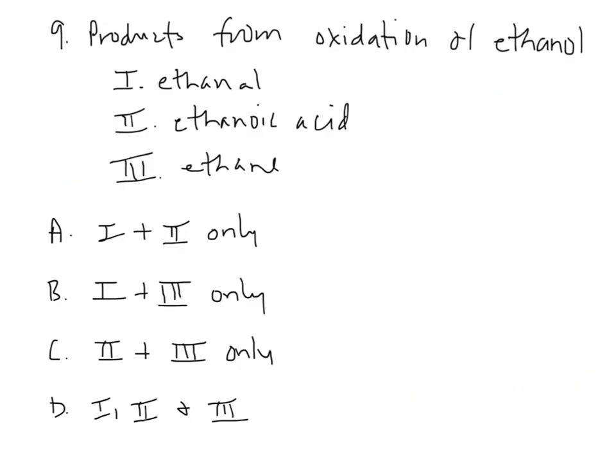Number nine, products formed from oxidation of ethanol. So if you think ethanol would just be like so with the five hydrogens attached. So this is going to be a primary alcohol, so that means I could make both an aldehyde and a carboxylic acid. Ethane would not be an option, however. So one and two, but not three, which means A would be my best choice.